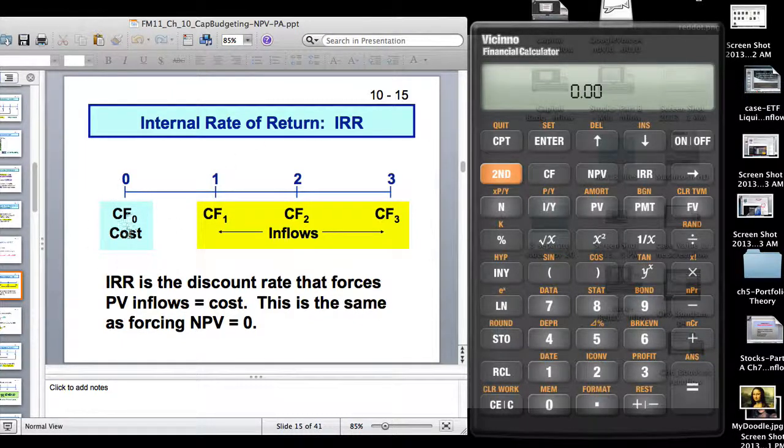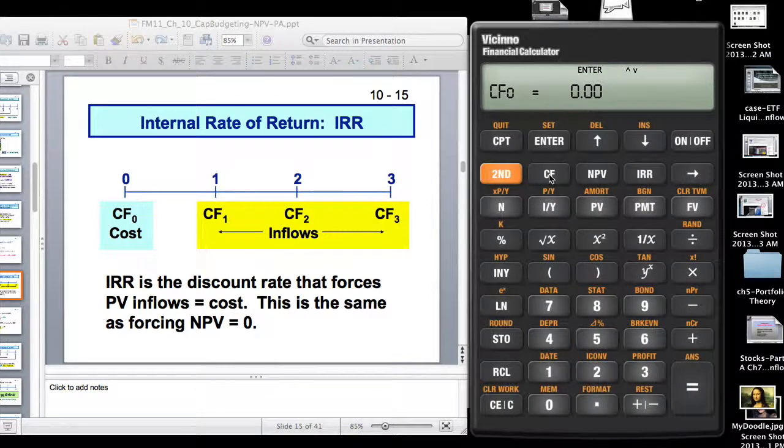Here's your cost, CF0, which in your calculators, if you hit the CF button, you see CF0 and that's your initial investment. C01, C02, and this F is frequency. They are your cash inflows, the return from the investment basically. The internal rate of return is the discount rate that forces present value of inflows to the cost.